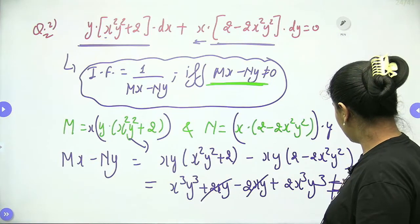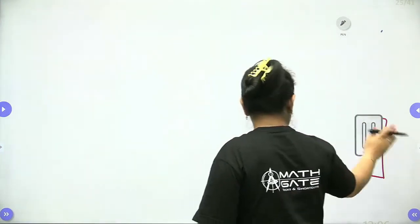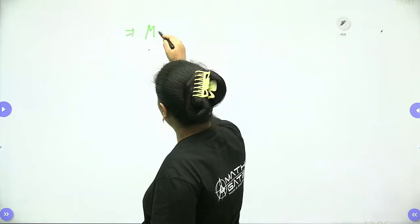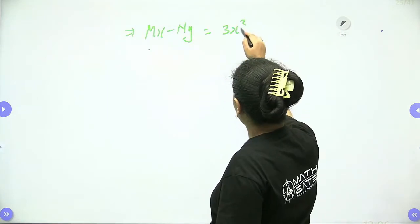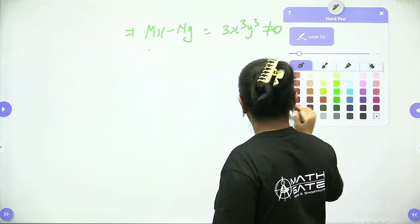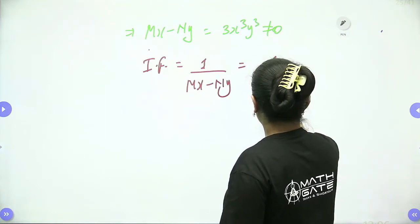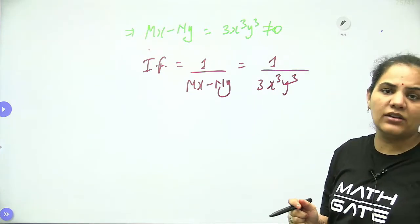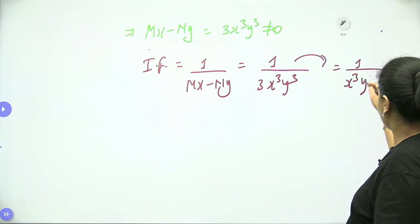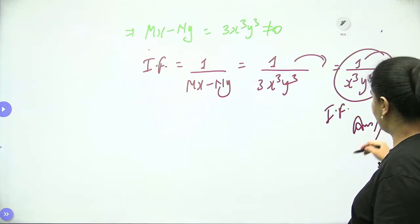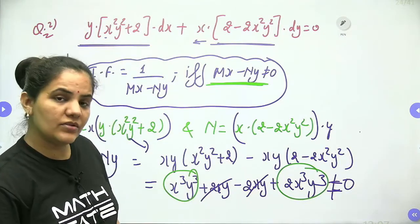Since mx − ny = 3x³y³, which is not equal to 0, the integrating factor is 1/(3x³y³). Removing the constant 3, the final integrating factor is 1/(x³y³). This is your final answer for example 2.